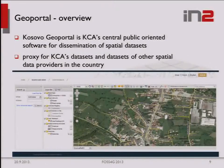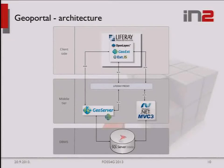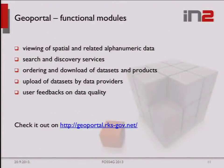This is a short GeoPortal overview. As mentioned, it is the central public-oriented software for dissemination of spatial data sets. The architecture is very similar to the KG application, except it includes Liferay Portal Enterprise wrapping client-side functionality, and an access proxy on the middle layer for proxying WFS and JSON requests to the business application. GeoPortal enables viewing spatial and related open numeric data, search and discovery services, ordering and downloading datasets, upload by data providers, and user feedback on data quality.